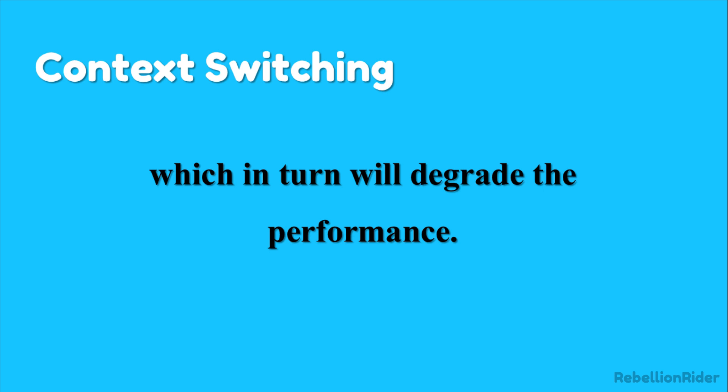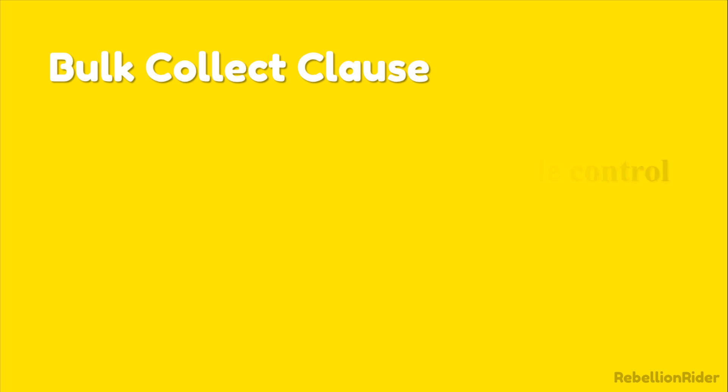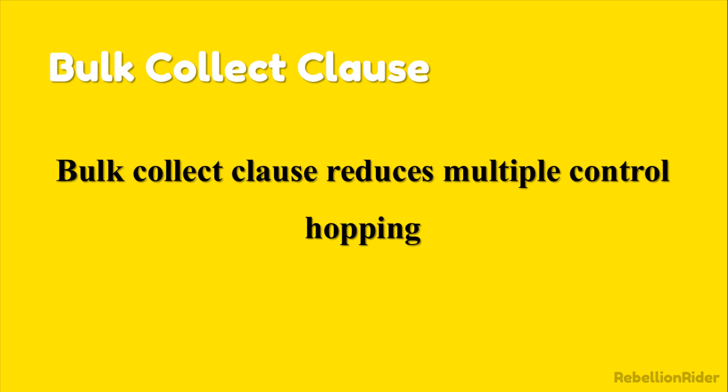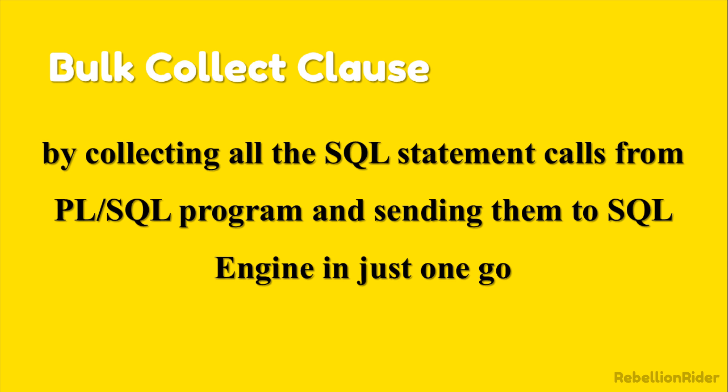Keeping this in mind, wouldn't it be great if we could replace multiple context switches with a single one? Well, you will be happy to know that we can do so by using the Bulk Collect clause in Oracle Database. Bulk Collect clause reduces multiple control hoppings by collecting all the SQL statement calls from the PL/SQL program and sending them to the SQL engine in just one go, and vice versa. It is like, instead of taking multiple trips to transfer players from their hotel to the stadium using a bicycle, just put them all into a bus and take them to the stadium in one single trip.